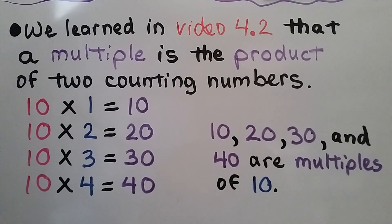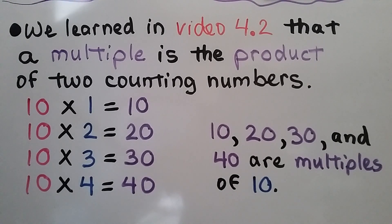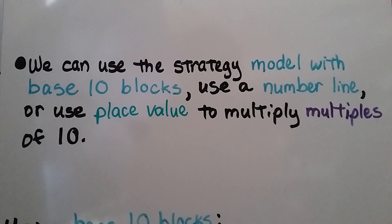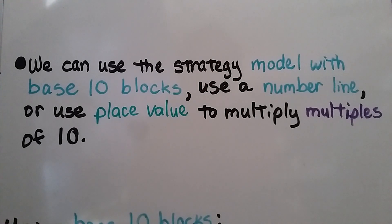They're the product of two counting numbers — 10 and 1, 10 and 2, 10 and 3, and so on. We can use the strategy of modeling with base 10 blocks, use a number line, or use place value to multiply multiples of 10.